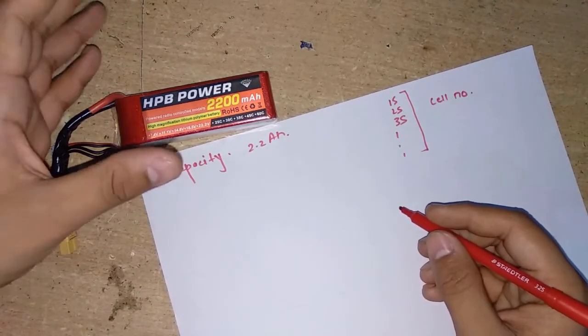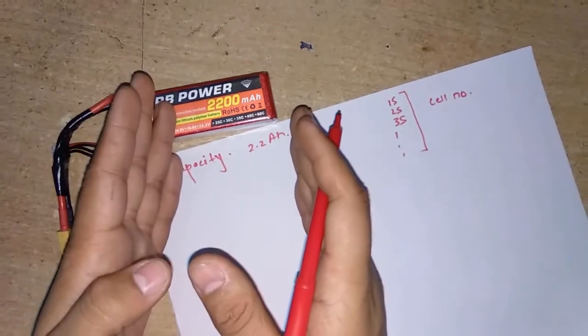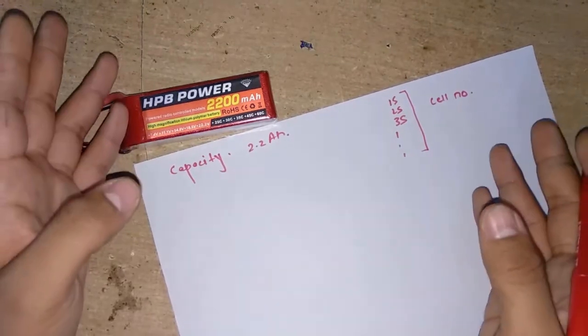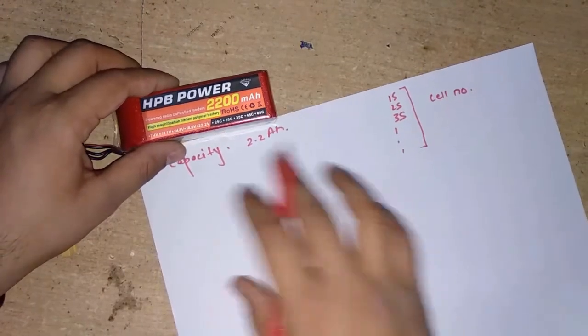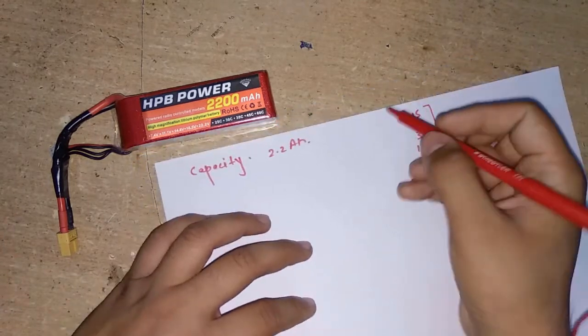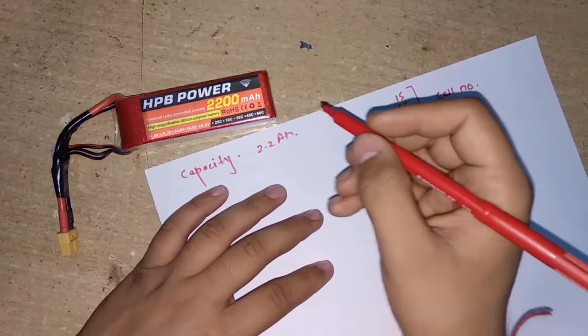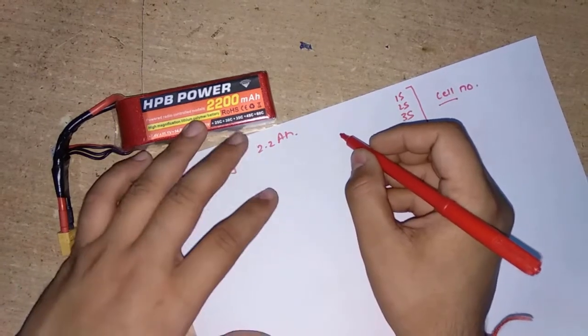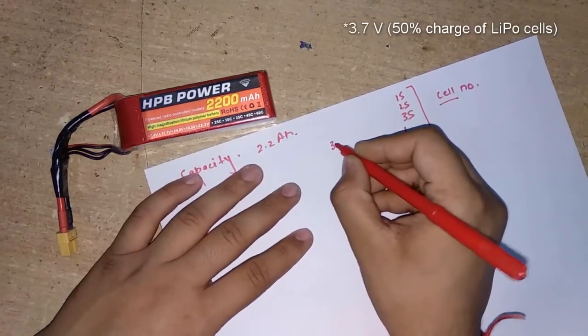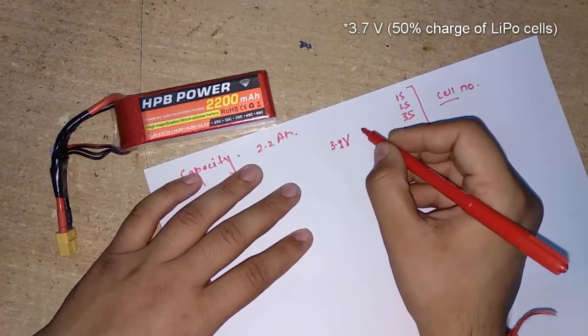These lithium polymer batteries are not based on voltage. For example, lead acid batteries are sold on the basis of how much voltage you want - a 9 volt battery, 12 volt battery, or 36 volt battery. In these batteries, it's like how many cells you want, because each cell of a lithium polymer battery has a voltage of around 3.7 volts.